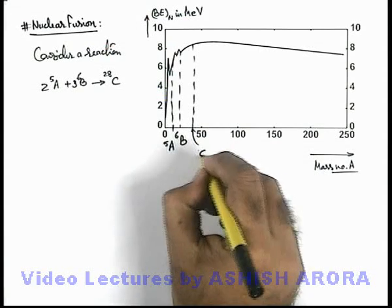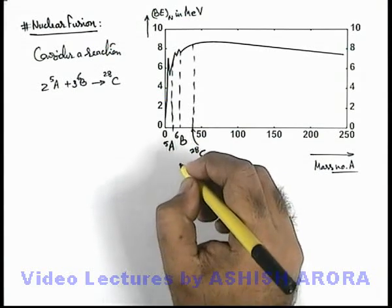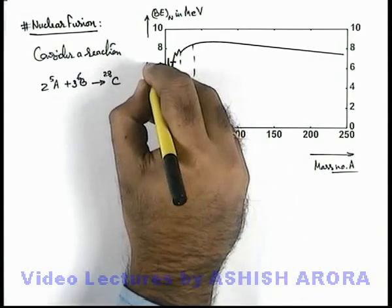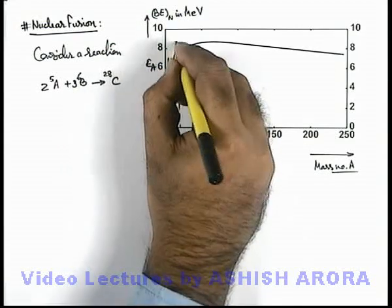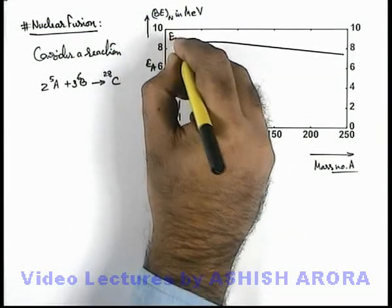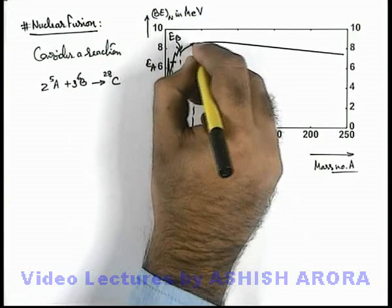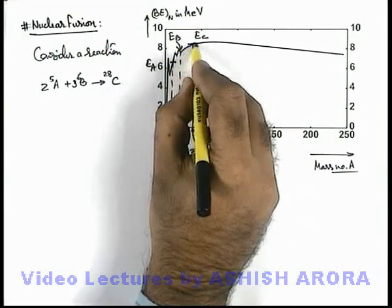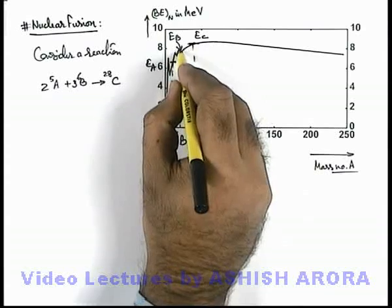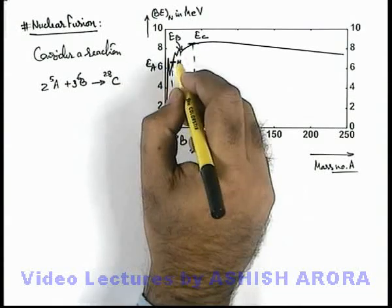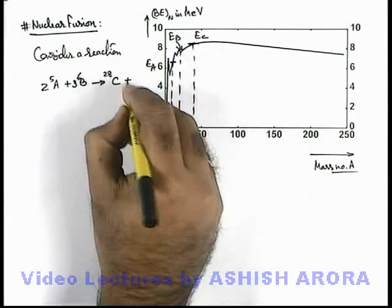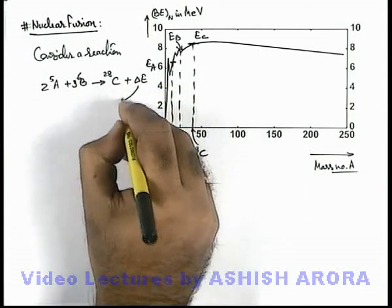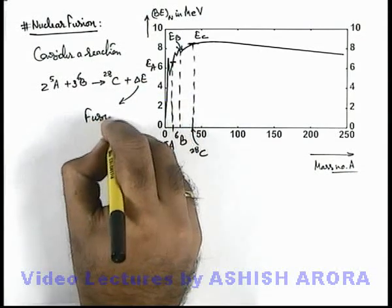Which is the nucleus C with mass number 28. If A is having binding energy per nucleon EA and B is having binding energy per nucleon EB and the binding energy per nucleon of C is EC, here we can see that binding energy per nucleon of C is higher than that of A and B. So certainly it is more stable, so some amount of energy ΔE is released which we term as fusion energy.